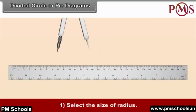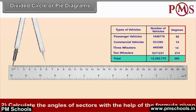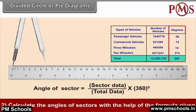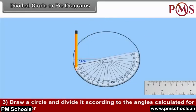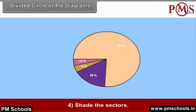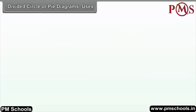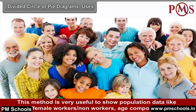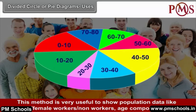Method of drawing a pi diagram: 1. Select the size of radius. 2. Calculate the angles of sectors using the given formula. 3. Draw a circle and divide it according to the calculated angles for each sector. 4. Shade the sectors. 5. Write the title and draw a legend to express each shade. Uses: This method is very useful to show population data like male-female ratio, workers and non-workers, age compositions, etc.